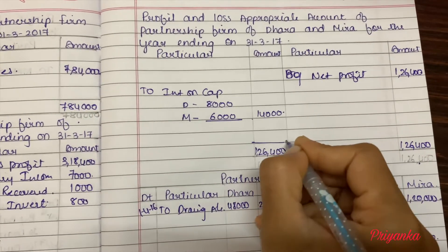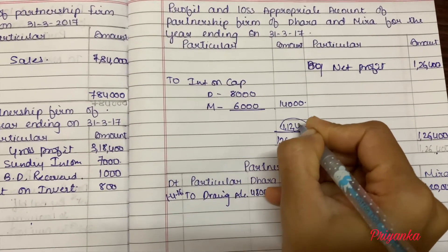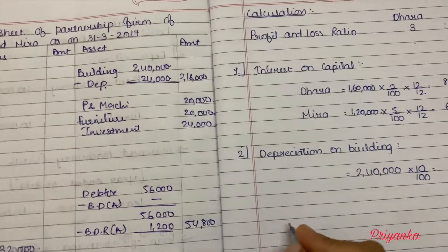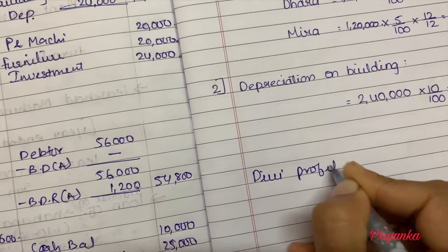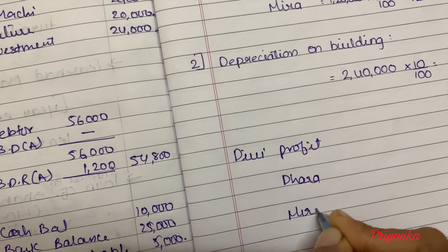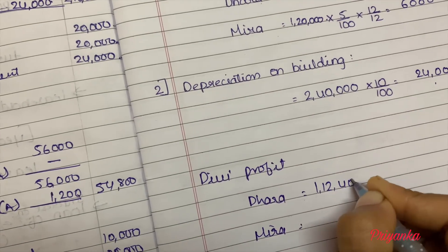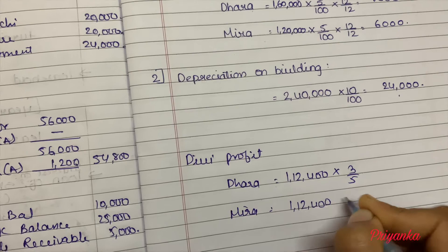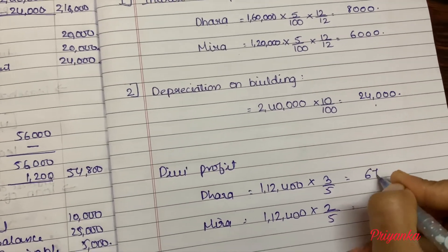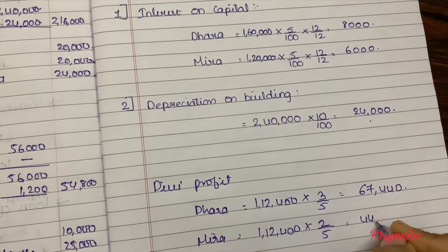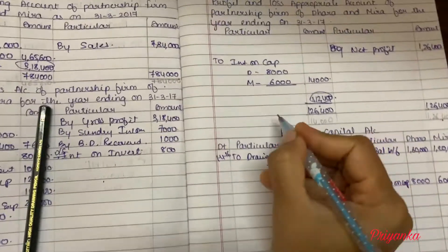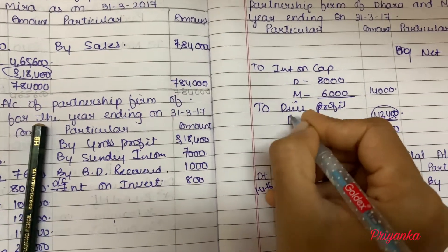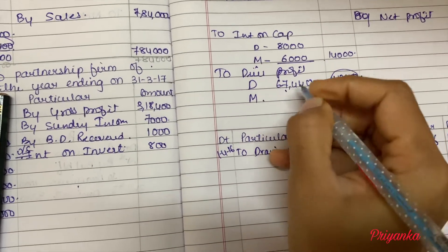Remove the difference as divisible profit: one lakh twelve thousand four hundred. This is going to be distributed between Dhara and Mira in the ratio 3 to 2. Divisible profit distributed: Dhara gets 3/5 and Mira gets 2/5 of one lakh twelve thousand four hundred. The calculation gives Dhara: 67,440 and Mira: 44,960. Write these in the profit and loss appropriation account as the partners' profit as per their ratio.